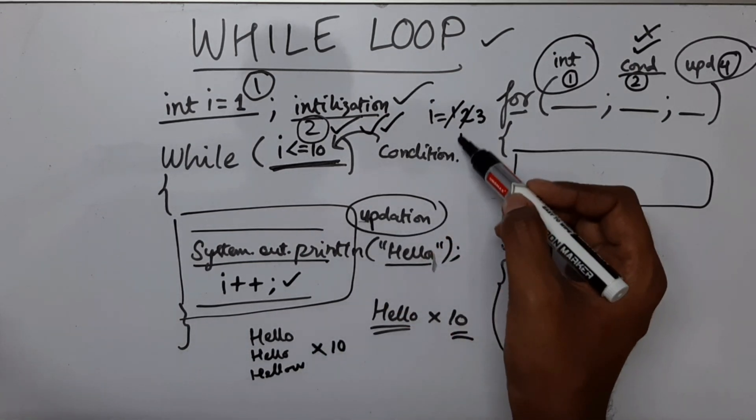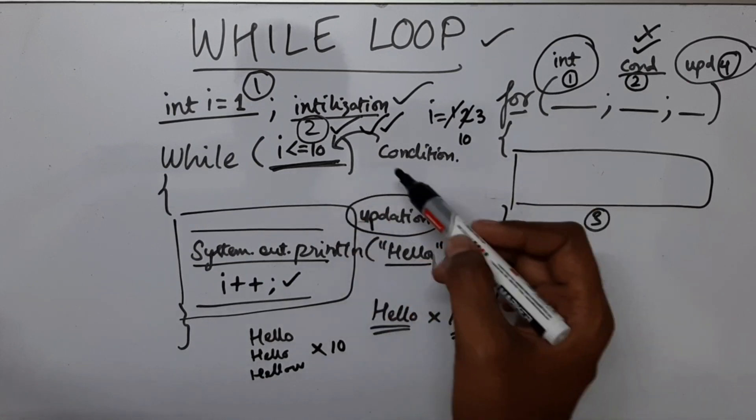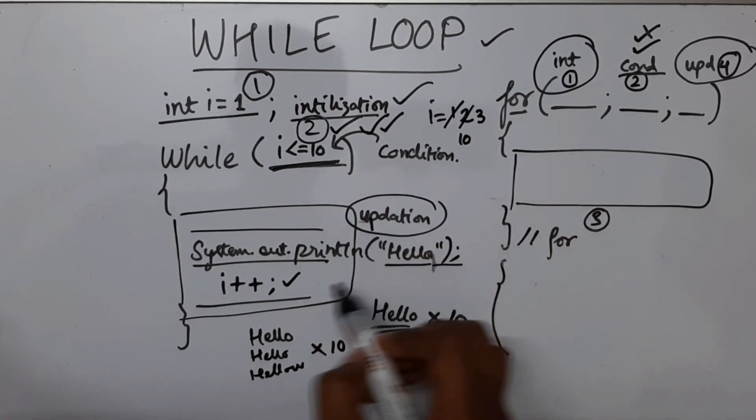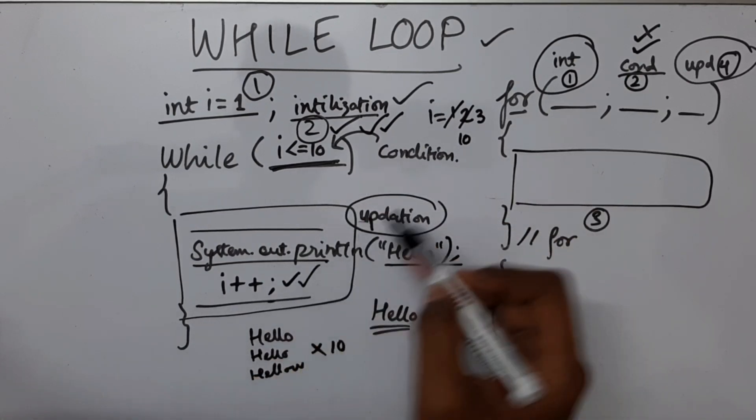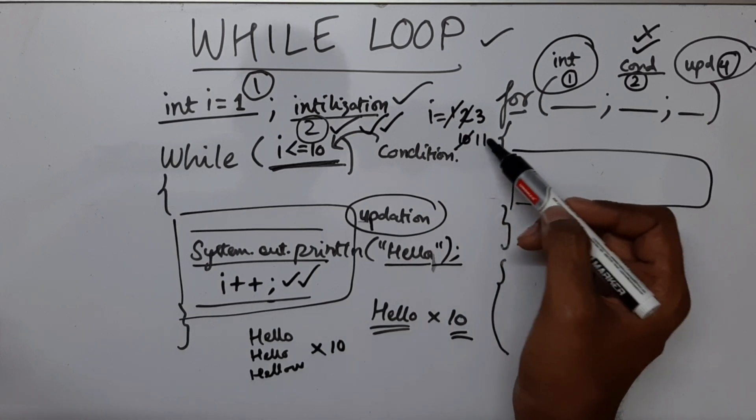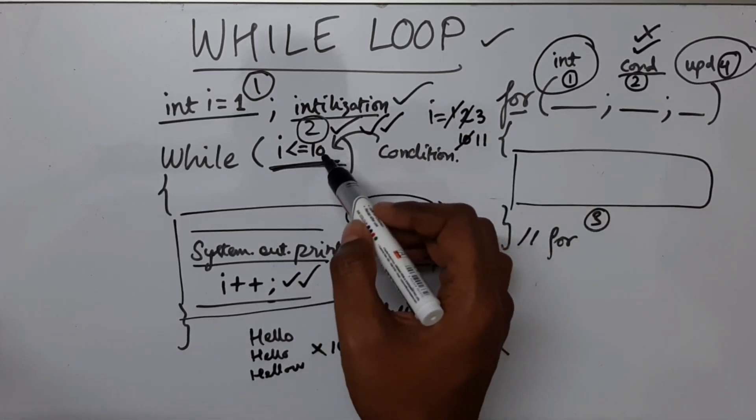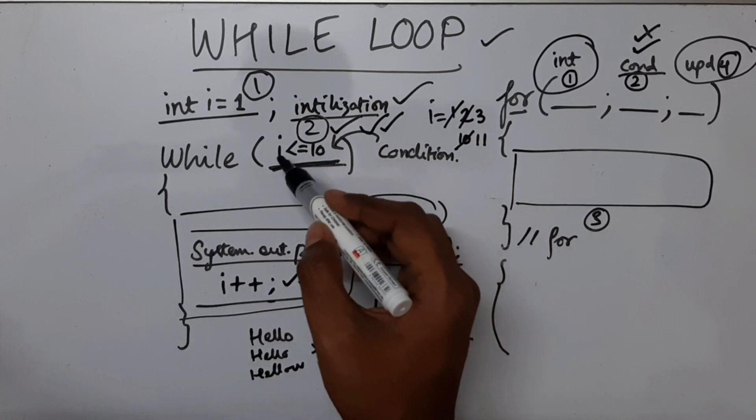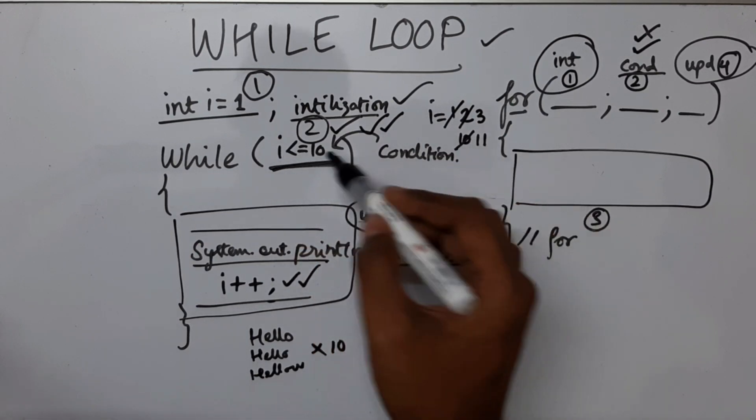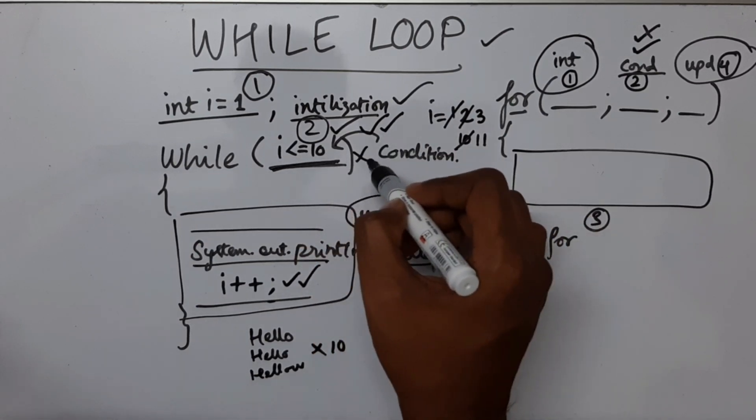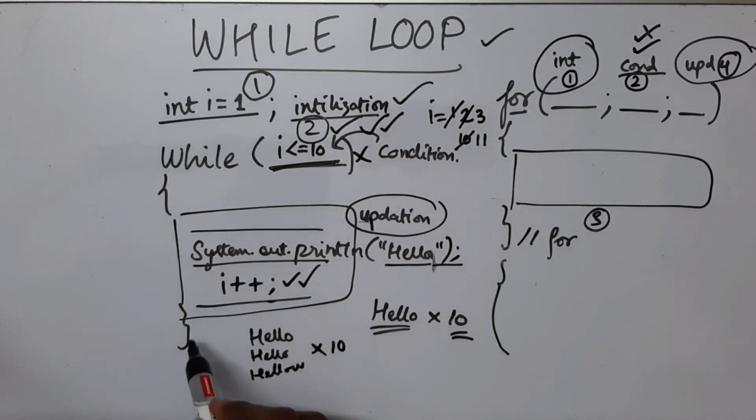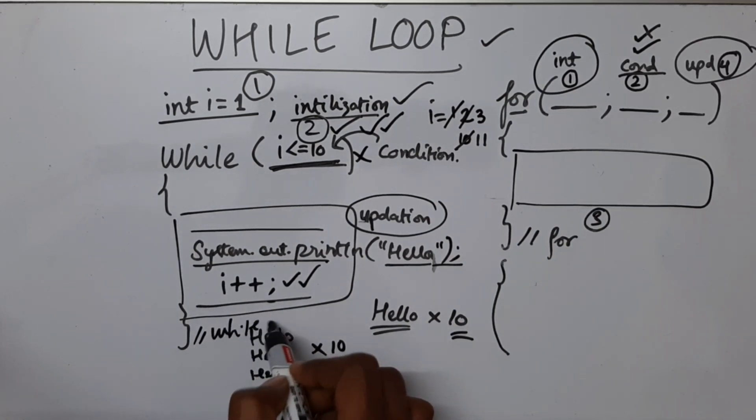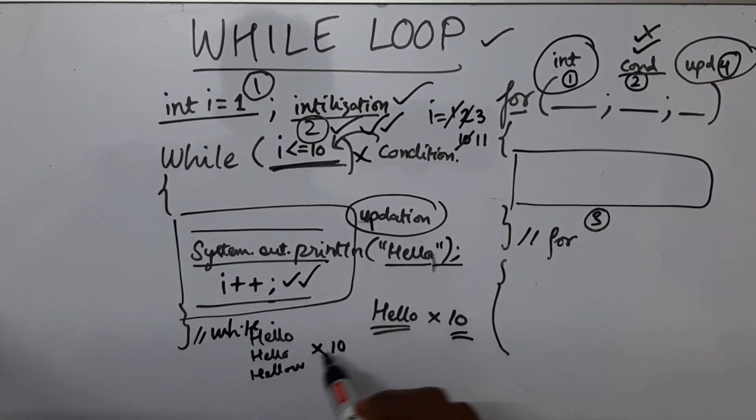The 10th time i will be 10. It will print, it will come over here, i++, i will become 11, it will go to the condition checking part. Since 11 is not less than equal to 10, this condition will fail. Hence we are going to come out of the while loop and hence we have printed hello for 10 times.